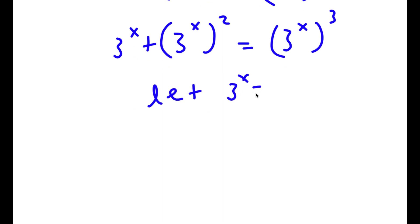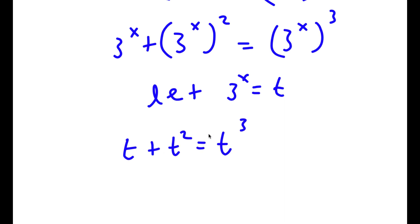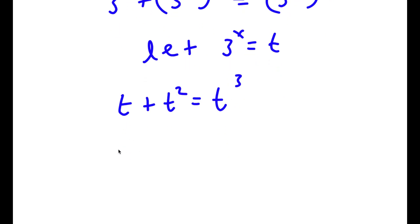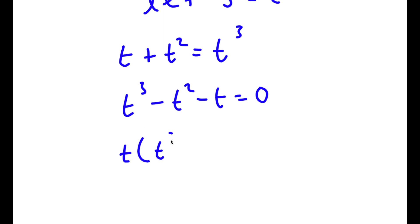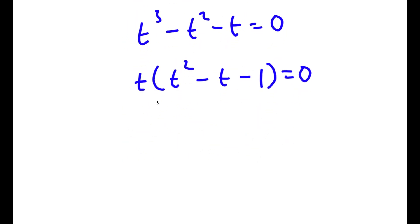Now if I let 3 to the power of x equal to the variable t, I'll have t plus t squared is equal to t to the power of 3. Rewriting this, I get t cubed minus t squared minus t is equal to 0.